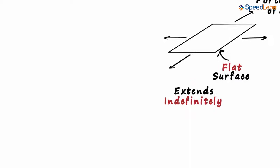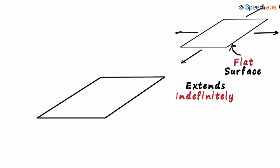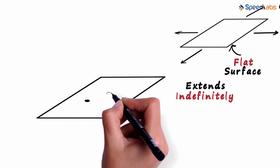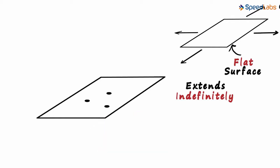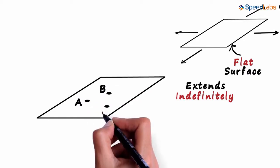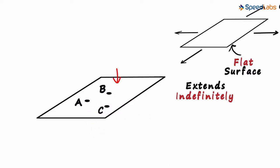But the important question is, how do we name a plane? The first thing we should know is that a plane has infinite points on its surface. Say these three points are A, B and C. This plane can be called ABC.